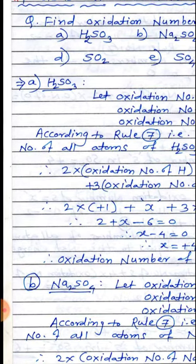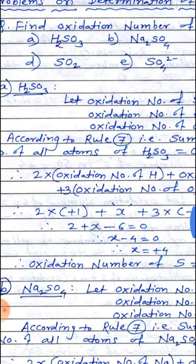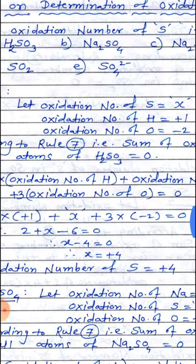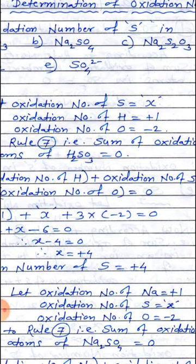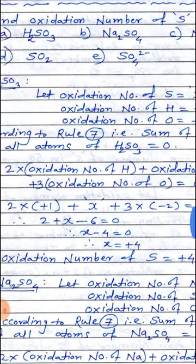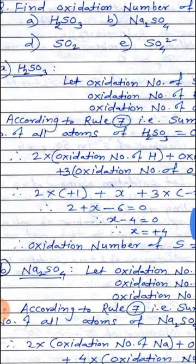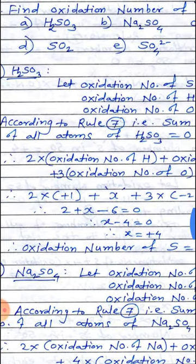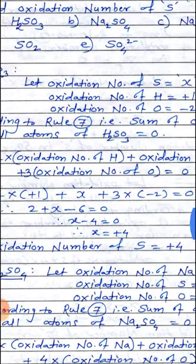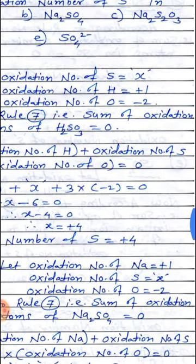We will see them one by one. Here, we have taken A: H₂SO₃, and in this molecule we have to determine the oxidation number of sulfur. Let the oxidation number of S equal to x. We know the oxidation number of hydrogen is equal to plus 1, and the oxidation number of oxygen is equal to minus 2.